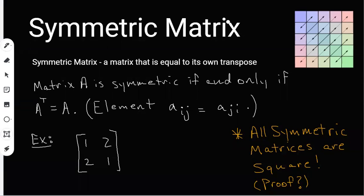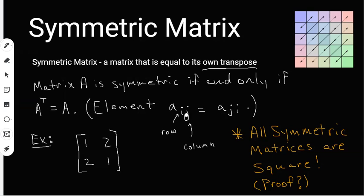This video is going to be all about symmetric matrices. A symmetric matrix is a matrix that is equal to its own transpose. If you exchange the rows for the columns to make the transpose, those two matrices are going to be equal. Matrix A is symmetric if and only if the transpose of A equals A. If you think about an element at row i and column j, switching the row and column number gives the transpose. If those two elements are equal for every element in the matrix, then you have a symmetric matrix.